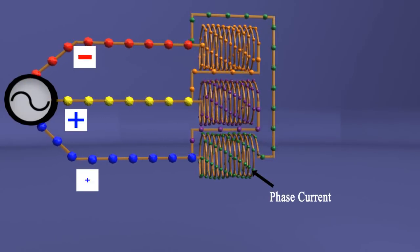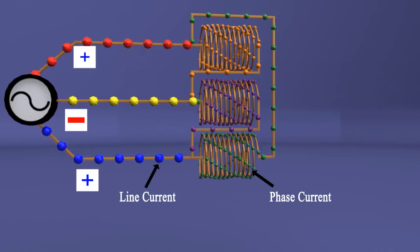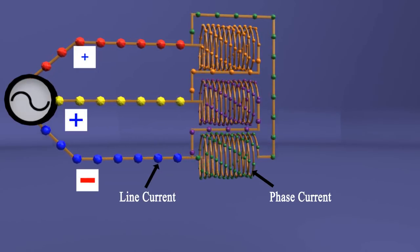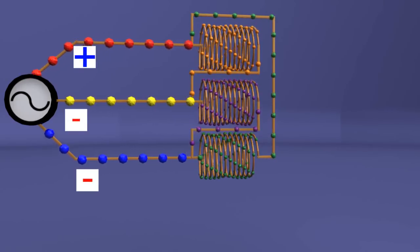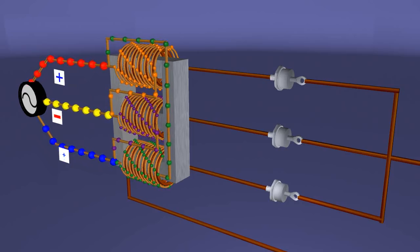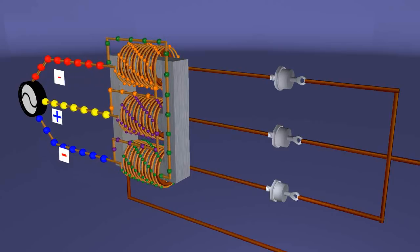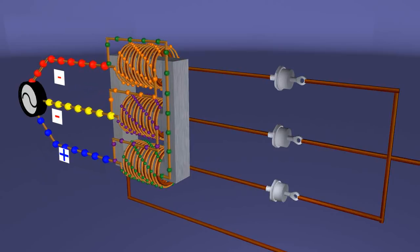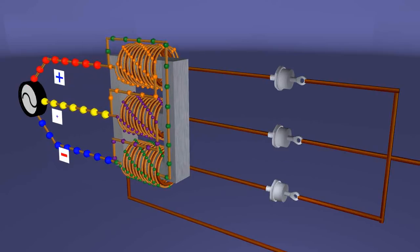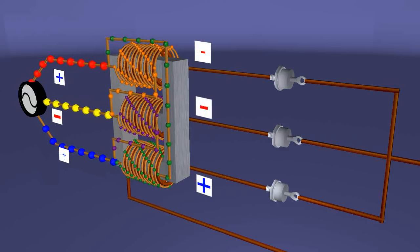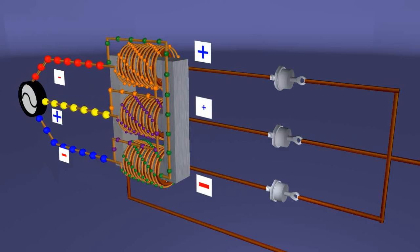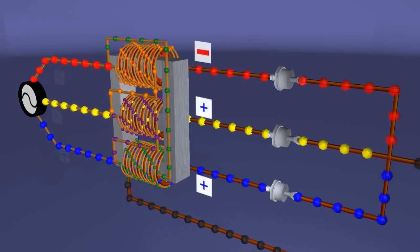The flux produced by this current induces EMF in the secondary winding. The EMF induced in the secondary winding tries to set up current through the DC load connected to the secondary winding.